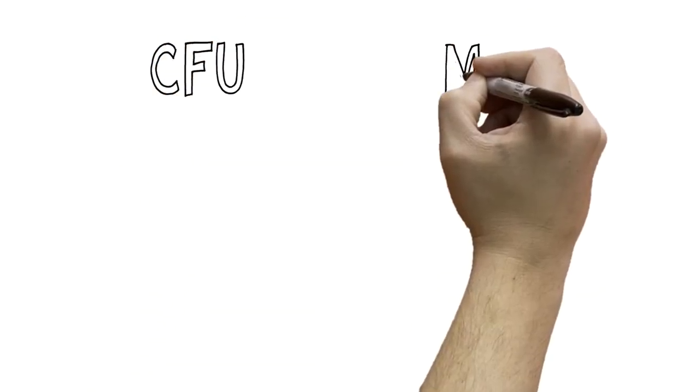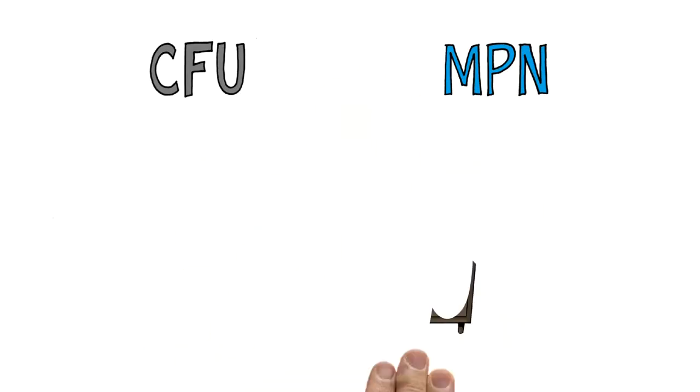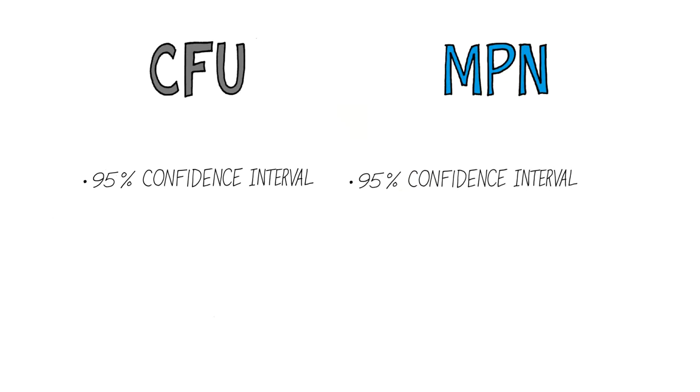Laboratories and agencies worldwide use MPN and CFU. Both measurements are a well-established means to estimate the number of bacteria in a sample, and both carry a 95% confidence interval.